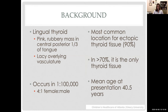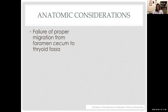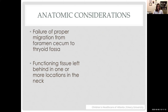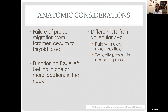Lingual thyroids are relatively rare with a female preponderance, and we can see enlargement brought on by different life stages — puberty, pregnancy, menopause, and even stress. They tend to be diagnosed later in life because they're often not noticed immediately. The tongue is the most common location for ectopic thyroid tissue, meaning functioning tissue, and in about 70 percent of patients it will be their only thyroid tissue. This represents a failure of proper migration of thyroid cells from the foramen cecum down into the neck.